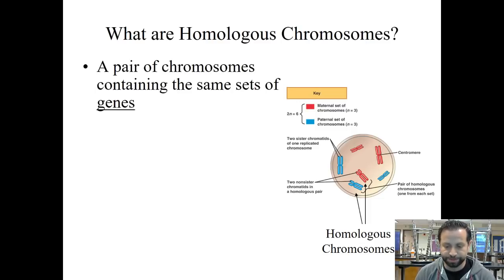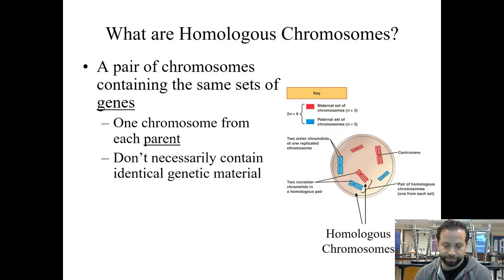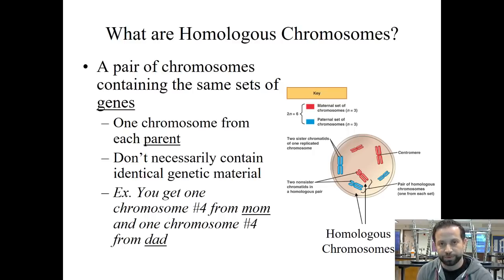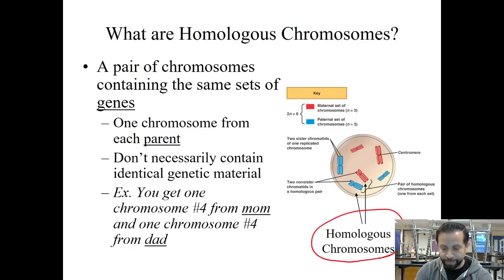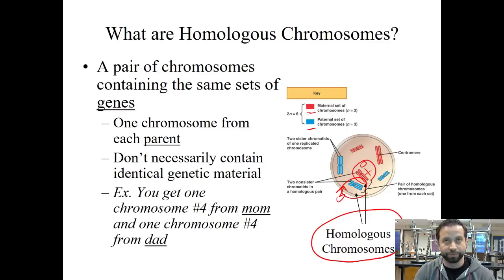What are homologous chromosomes? It's a pair of chromosomes that contain the same set of genes — you get one from each parent. They don't necessarily have the same identical information, but they could each have the gene for, let's say, hair color. You get chromosome number 4 from mom, and chromosome number 4 from dad. Let's say maternal is red, paternal is blue — you get the red one from mom, you get the blue one from dad. Notice how these have both replicated. When you have two replicated chromosomes hanging out next to each other and they're both chromosome number 4 or number 8, we say those are homologous chromosomes.